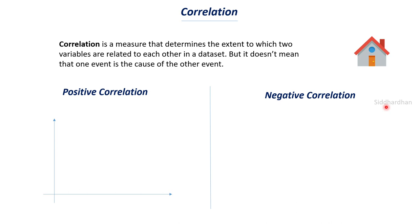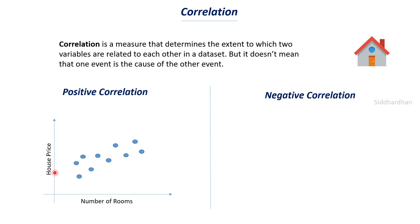Using the house example: plotting number of rooms on the x-axis and house price on the y-axis with 10 data points, we can see a clear trend — as number of rooms increases, house price also increases. We can fit a straight line through the data points. These two variables — number of rooms and house price — are positively correlated. For negative correlation, plotting crime rate versus house price shows that as crime rate increases, house price decreases.